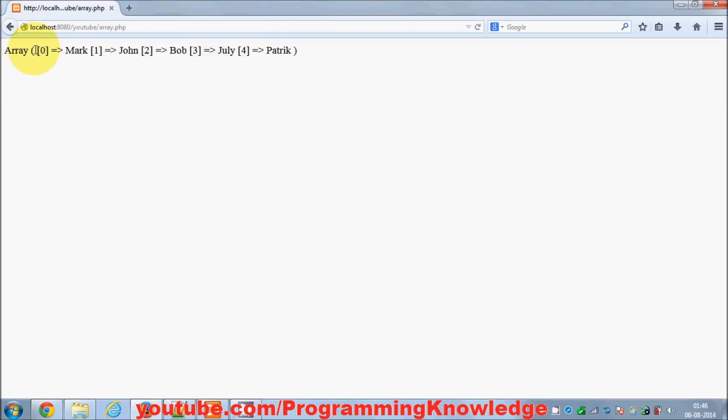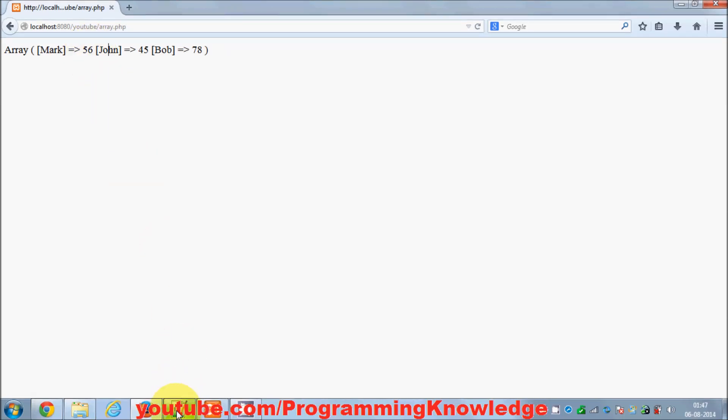earlier example, whenever we were using the index, the index was decided by PHP for us. The name was the value and the index was decided by PHP. Now when I refresh this, you see the key is now the name and the value is your weight, whatever weight each person has. This gives you the flexibility to decide your own key and assign a value to it. Now for example,